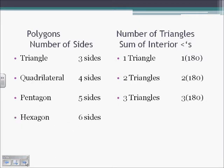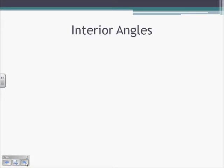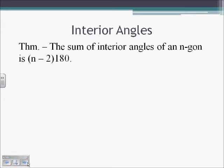A hexagon has six sides; consequently it ends up with four triangles, so the sum of the interior angles is four times 180, which is 720. Our theorem for interior angles: the sum of the interior angles of any n-gon is n minus 2 times 180, where n is the number of sides. After nonagon, we have decagon with 10 sides, then we just name them by number — an 11-sided polygon would be an 11-gon, a 33-sided polygon would be a 33-gon.